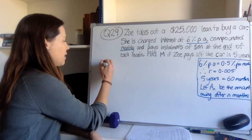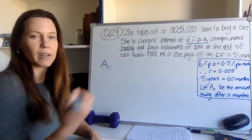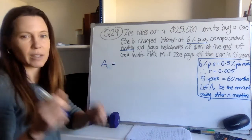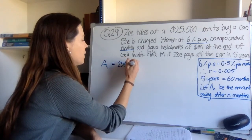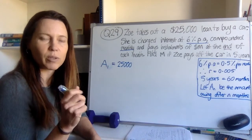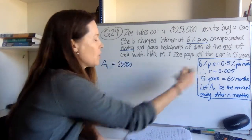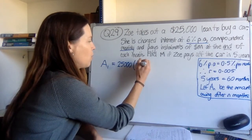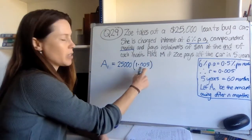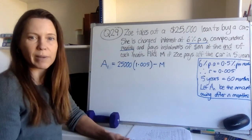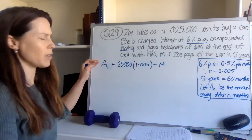Now I can come up with a formula for a_n, which is the amount owing at any one time. I want to think about what a_1 would be — how much does she owe at the end of the first month? The first day she walked out of the bank holding her $25,000, she owed $25,000. By the end of the month, the bank would have charged interest, so they'll multiply it by 1.005, which is just one plus the rate. Then after interest has been charged, she'll pay off an amount — we're calling that M. So that's how much she owes at the end of the first month. You really need to get things in the right order.